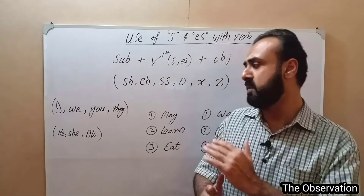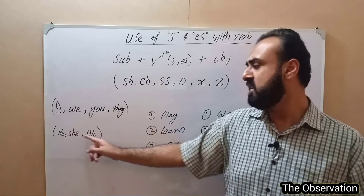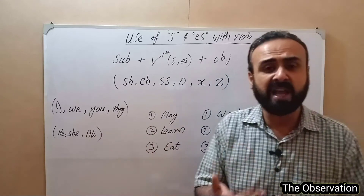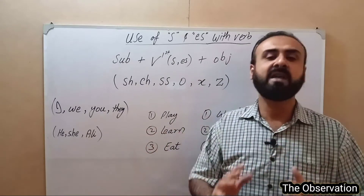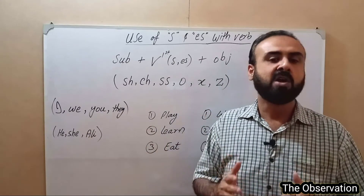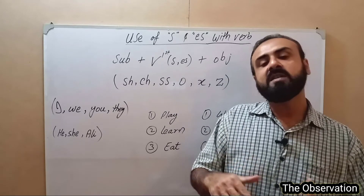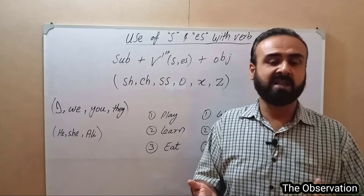When I, we, you, or they is used, the verb remains unchanged. But as soon as a third person singular subject — he, she, or a single name like Ali — comes in the subject, then S or ES is added to the verb.